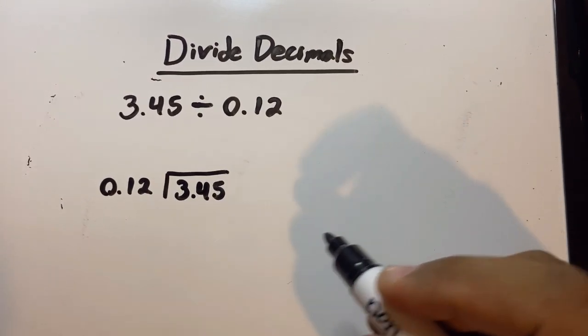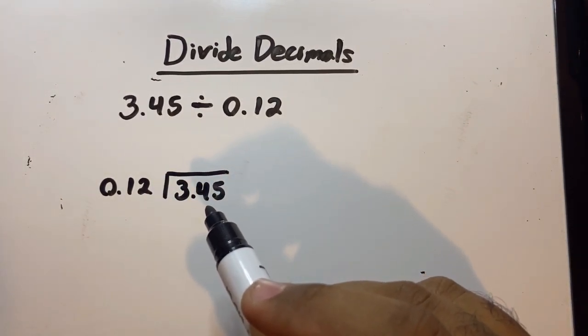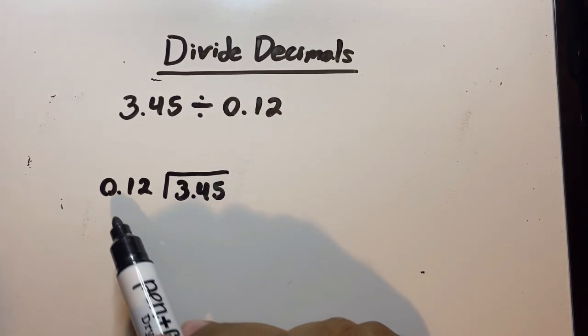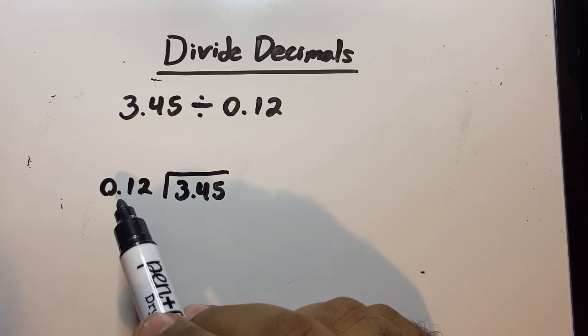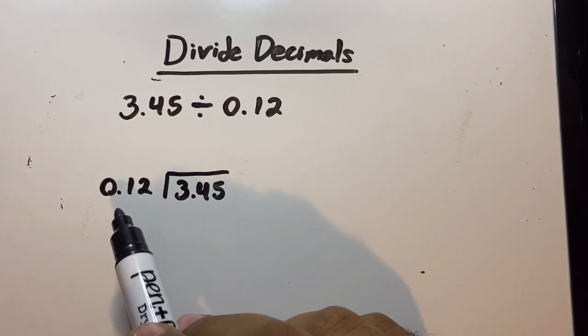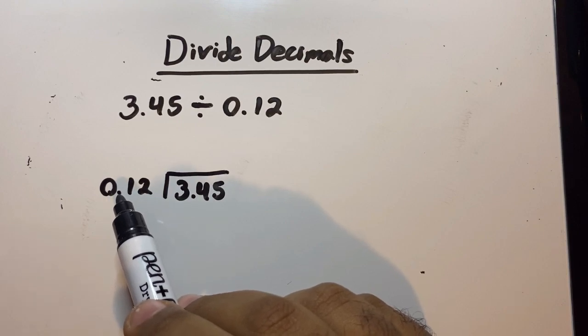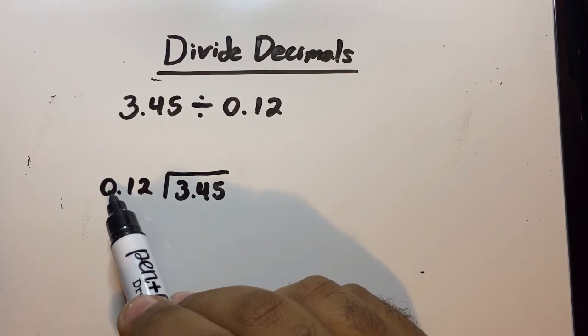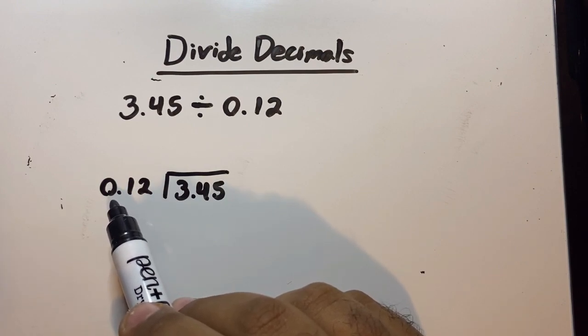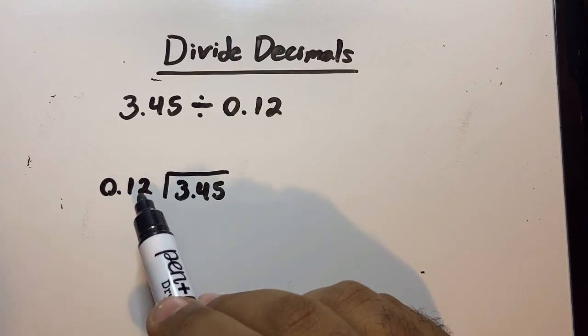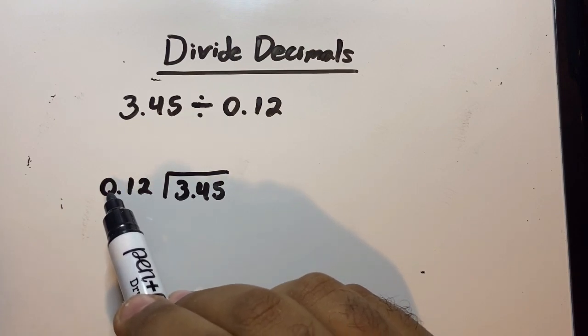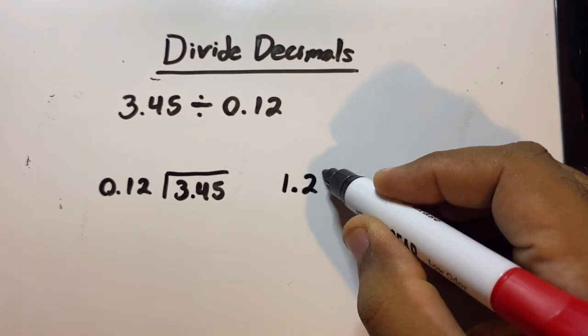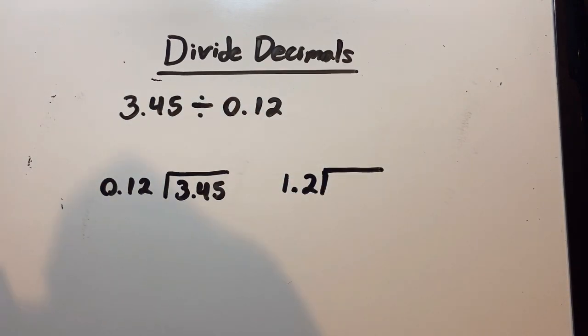Now our equation is 0.12 divided into 3.45. Before we do that, we have to get rid of this zero. The way we do that is we move this decimal point. Since there's only one zero, we only need to move this decimal point one time to the right. If there's a zero in the beginning, you just move it one time to the right until you get a whole number replacing it, so it should look like this: 1.2.